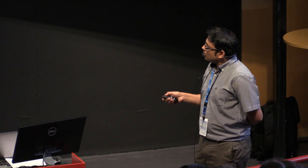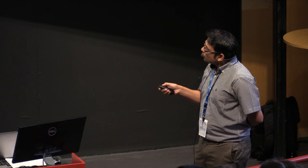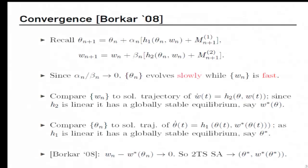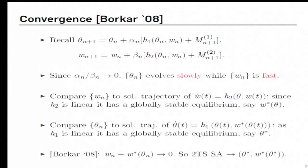Then in this work, it was shown that the difference between w_N and the solution of this ODE when theta is replaced by theta N, this difference goes to zero on some nice conditions. And then one can show that a two-time scale algorithm of this form would converge to theta star comma w star of theta star. So our question was, okay, this is where such an algorithm would converge to. How fast would it converge to there?